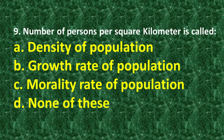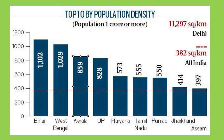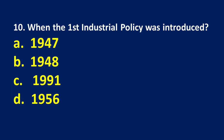The right option for the ninth question is A — density of population. Tenth question: when was the first industrial policy introduced?